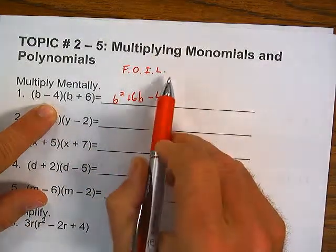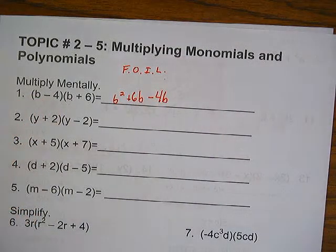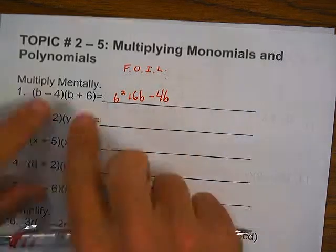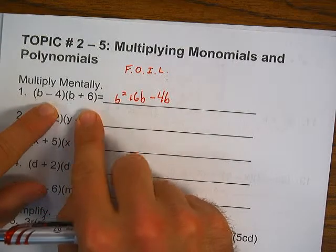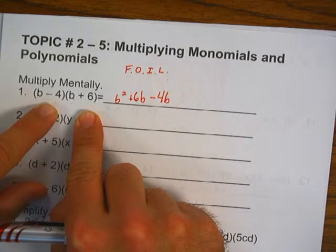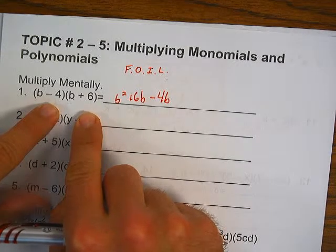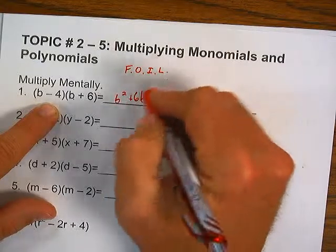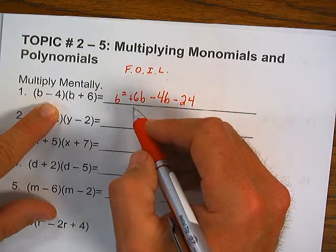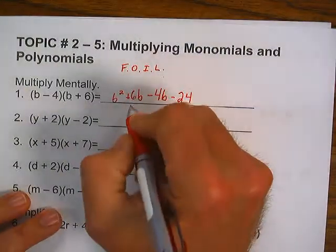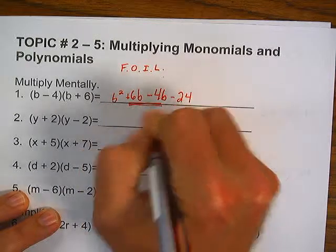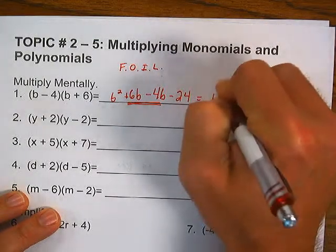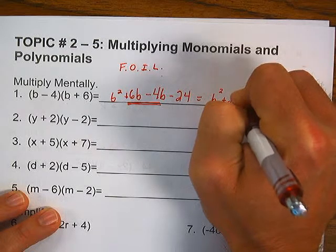L stands for Last. What's negative 4 times 6? Negative 24. Eventually you'll be able to do this step in your head, but for right now write it out and combine like terms. The like terms are in the middle: 6B minus 4B is 2B. So we have B squared plus 2B minus 24.